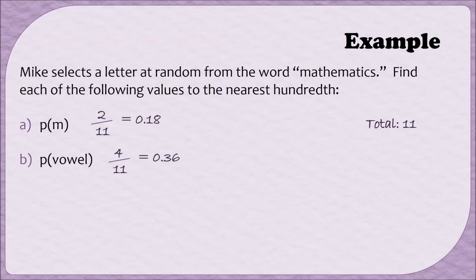Let's do one more example together. What is the probability of finding a Z? When I look at the word mathematics, there is no Z. So since there are zero Z's, zero is our numerator, and zero divided by anything is always going to be zero.